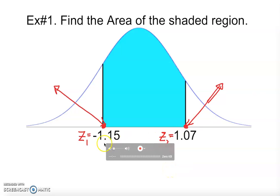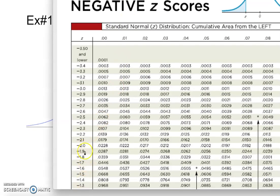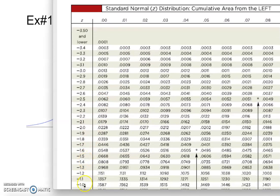Negative 1.15 - we jump into negative 1.1, go all the way down to 5. That is 5 here, so 0.1251. Area 1 is equal to 0.1251.